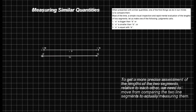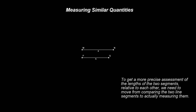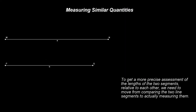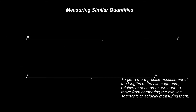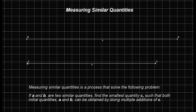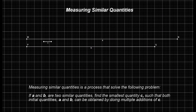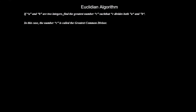This implies moving from comparing the two line segments to actually measuring them. Measuring similar quantities is a process that solves the following problem: if A and B are two similar quantities, find the smallest quantity C such that both initial quantities, A and B, can be obtained by doing multiple additions of C. The quantity C is the common unit of measurement for both A and B.